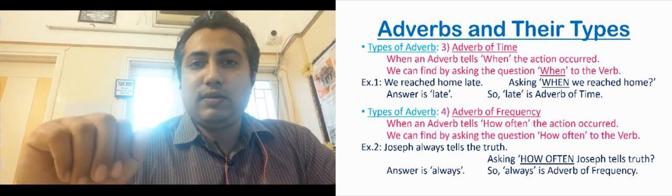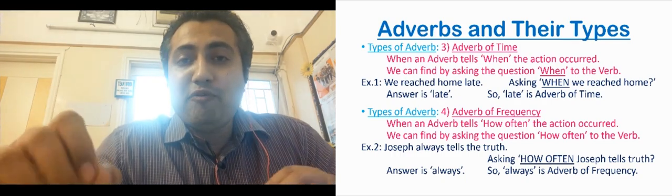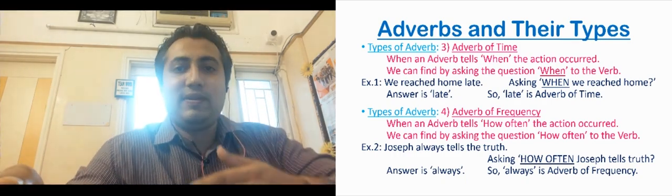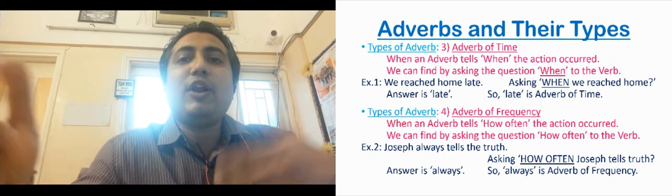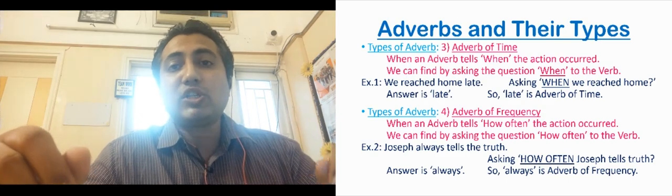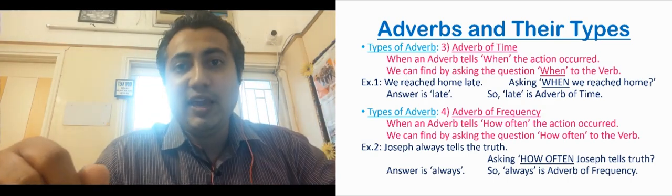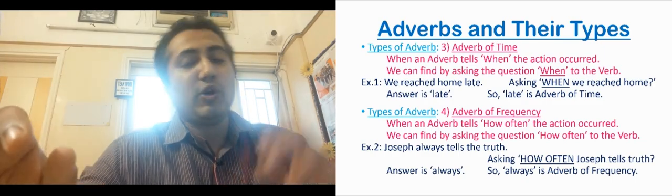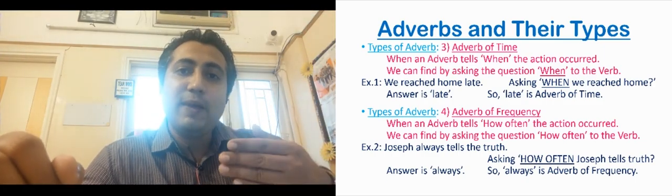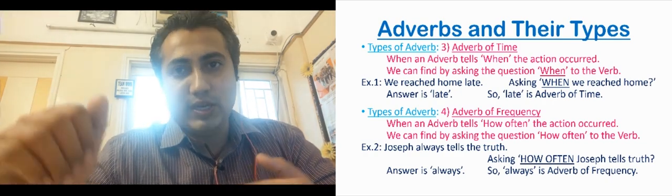Next one is adverb of frequency. Adverb of frequency tells how often the action happens — kab kab hota hai. For example, how often do you brush? Every morning. How often do you have breakfast? Every day at 8 o'clock. In this way, how often an action happens — that is adverb of frequency.